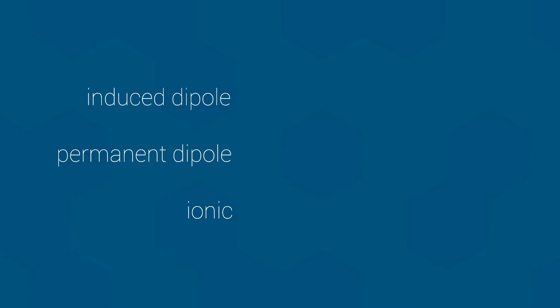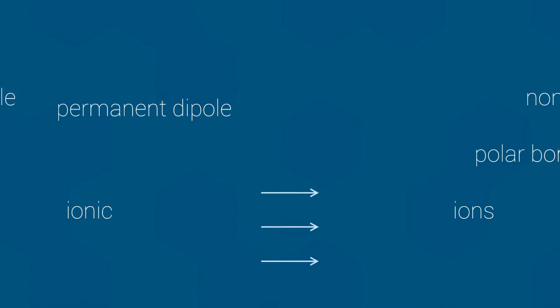Induced dipole interactions generally involve non-polar bonds. Permanent dipole interactions generally involve polar bonds. And ionic interactions involve ionic bonds, although we will simplify that and say they generally involve ions. So let's talk about each type of interaction individually. And for no particular reason, I will start with the permanent dipole interactions.